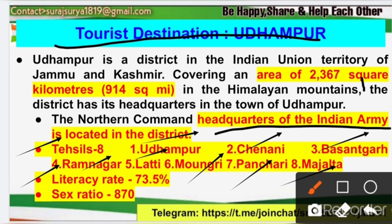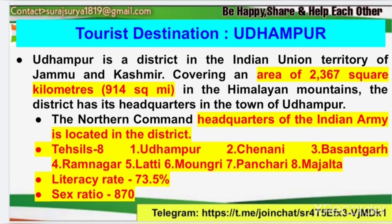As far as I know about the Jammu region, an important question asked in exams is: where is the headquarters of the Northern Command of the Indian Army? The answer is that it is located in Jammu and Kashmir Union Territory, specifically in Udhampur district — the Northern Command of the Indian Army is in Udhampur district. The literacy rate is 73.5%, there are 8 tehsils, and the sex ratio of Udhampur district is 870 women per 1000 men.